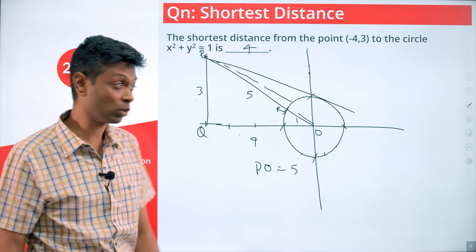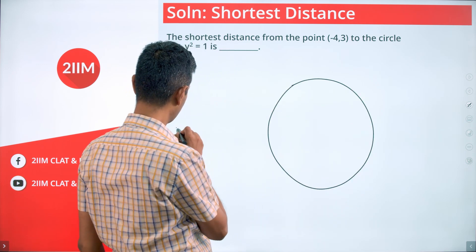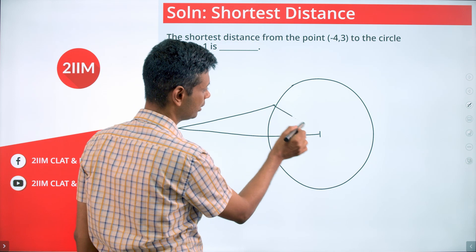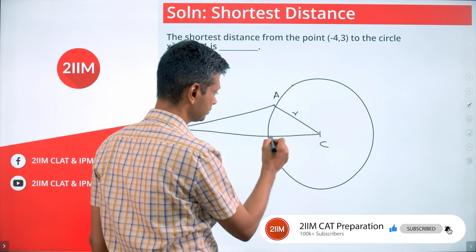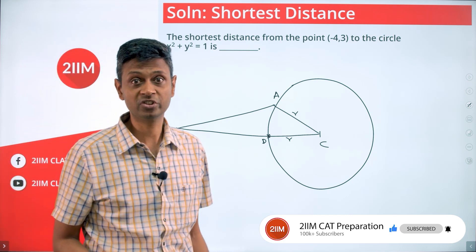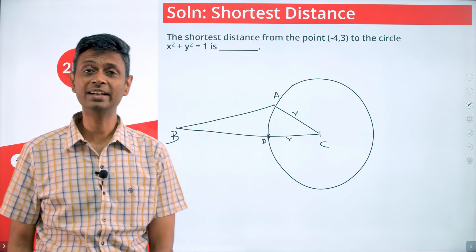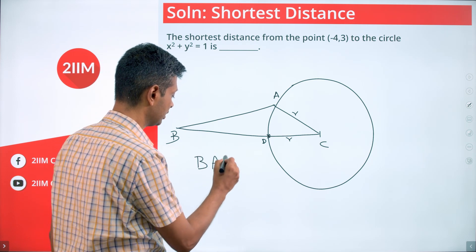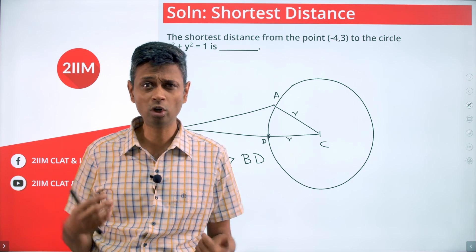Now I want to think about why that line should be the shortest. I'm not going to give you the full answer — I'm going to give you a starting point. From a point outside a circle, draw a line to the center. Then draw another arbitrary line to any other point on the circle. Think about triangle ABC where CA and CD are both radii. We want to prove BD is less than BA — that is, BA (distance to any arbitrary point) is longer than BD (distance to the point on the center line). Use the idea that the sum of two sides of a triangle is always greater than the third side to prove that BA is greater than BD.